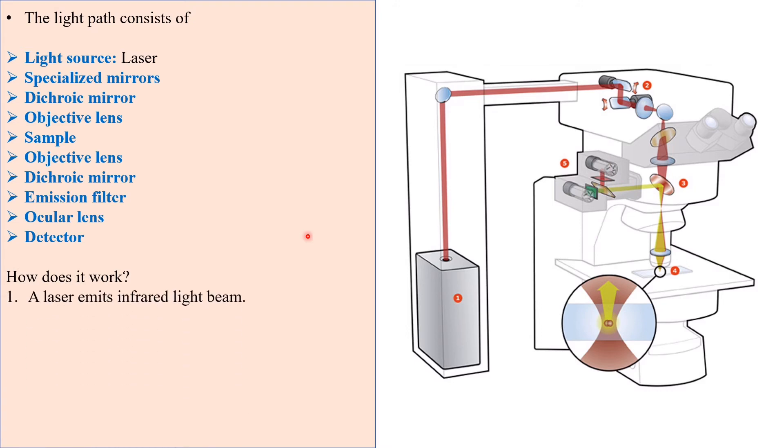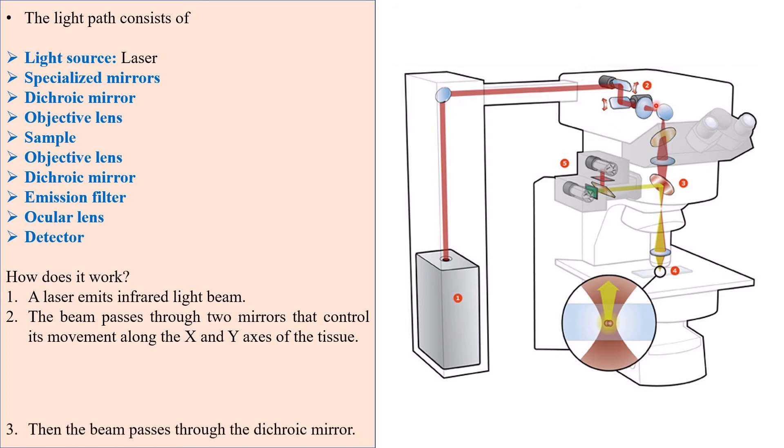But how does it work? A laser emits infrared light beam. The beam passes through two mirrors that control its movement along the X and Y axis of the tissue.